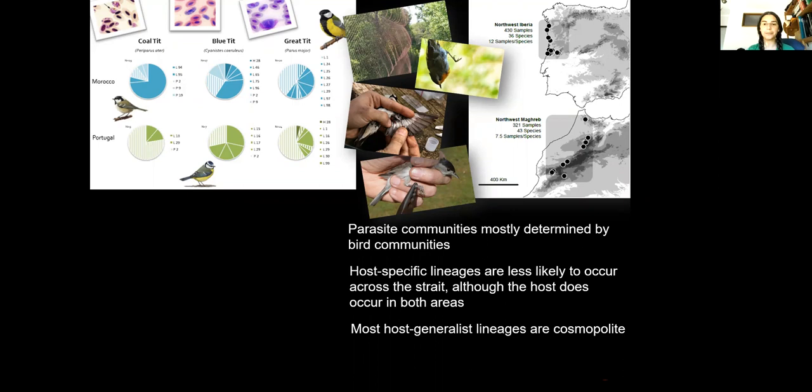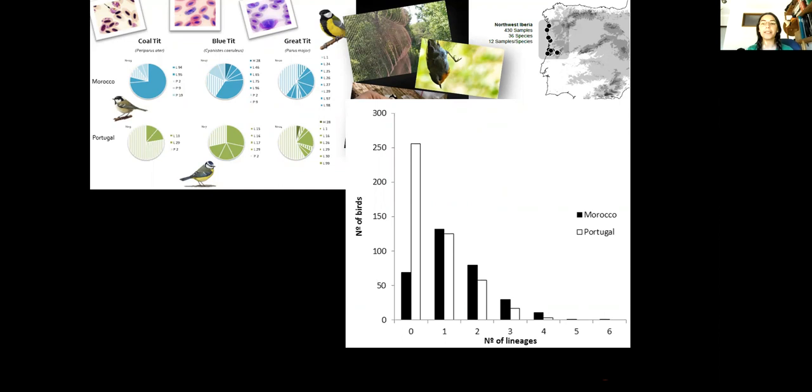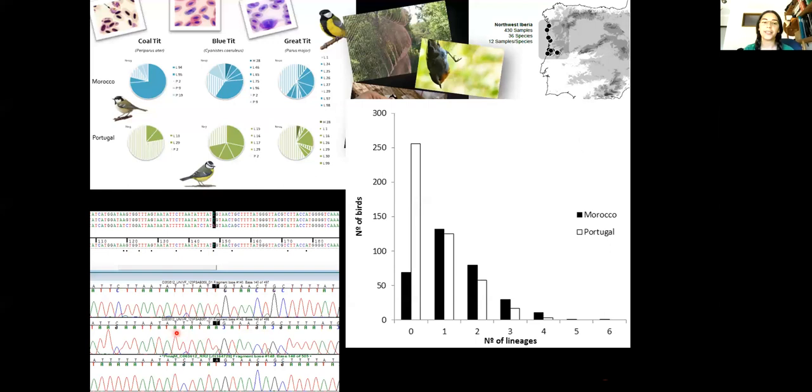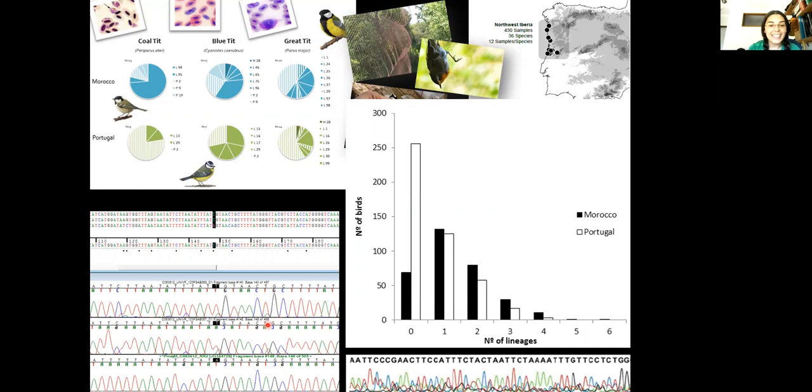Another thing we found is that often individuals were harboring more than one parasite lineage. Although in most cases you could detect the double infection, we were working with Sanger sequences, you could see every now and then you would have double peaks which would mean there's two parasite lineages occurring in a host. Sometimes it was not as easy and you would have a mess of sequences going on and it was not very easy to disentangle one lineage from the other.